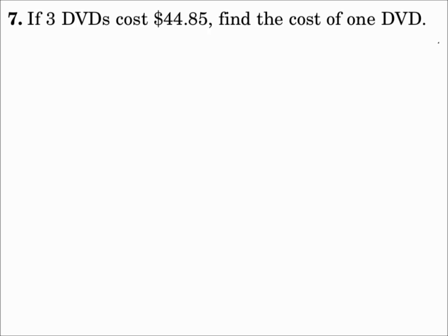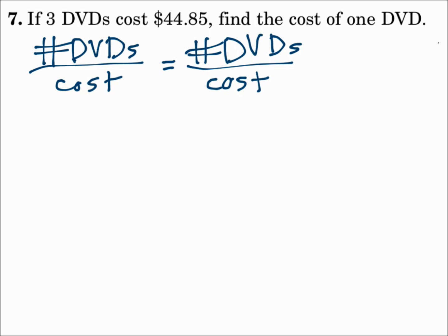Number seven. If three DVDs cost $44.85, find the cost of one DVD. Well, we can set up a proportion here. Just make sure that it's organized. We're dealing with the number of DVDs and the cost of it. So we can make a proportion. The number of DVDs divided by the cost equals the number of DVDs divided by the cost. And now we'll put each situation into each fraction.